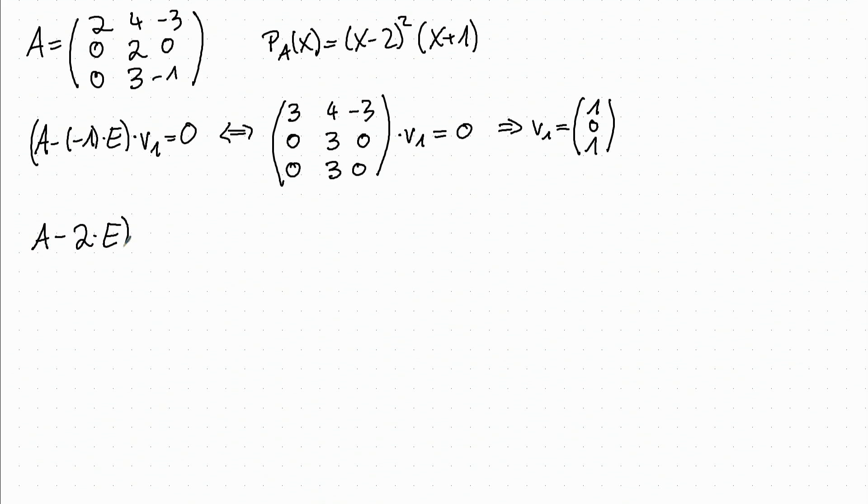A minus twice the unit matrix times V_2 equals 0. This is equivalent to 0, 4, minus 3, 0, 0, 0, 0, 3, minus 3 times V_2 equals 0.